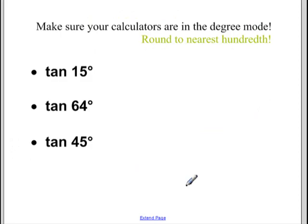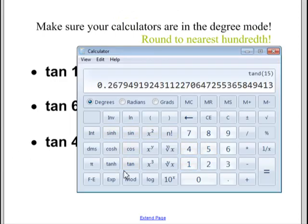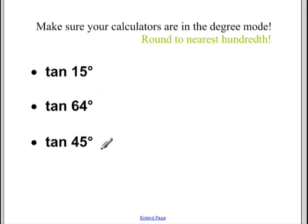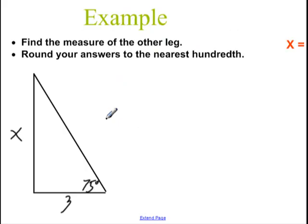The tangent of 15 degrees: you just put 15 and press tangent. In this problem I'm asked to round to the nearest hundredth, so you would round .267 to .27. So the tangent of 15 degrees is .27. Tangent of 45 is 1. We could do tangent of 64, but I want you to see how we can use this, so let's look at an example.